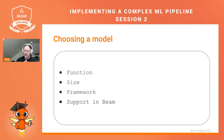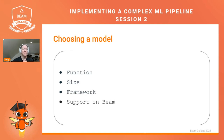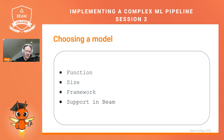When you have a problem that you're using an ML model to solve, there are several considerations you have to make for choosing a model. The most important consideration is the function — will the model do what you need? This can often be more of a challenge than you expect. You may have a task that doesn't map well to a given model, or it may be difficult to find the right model for a task.